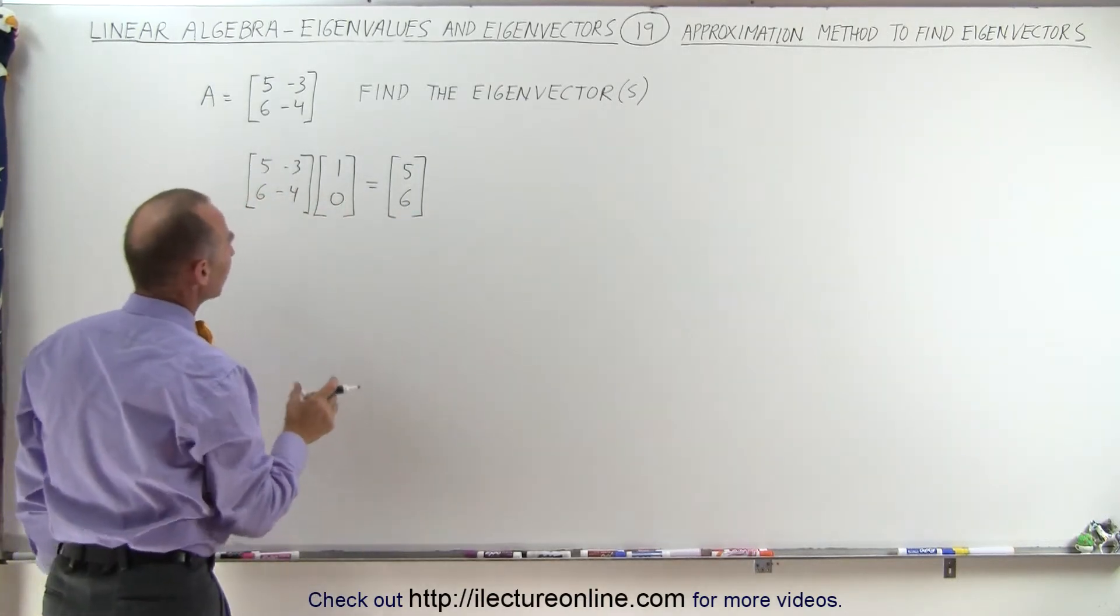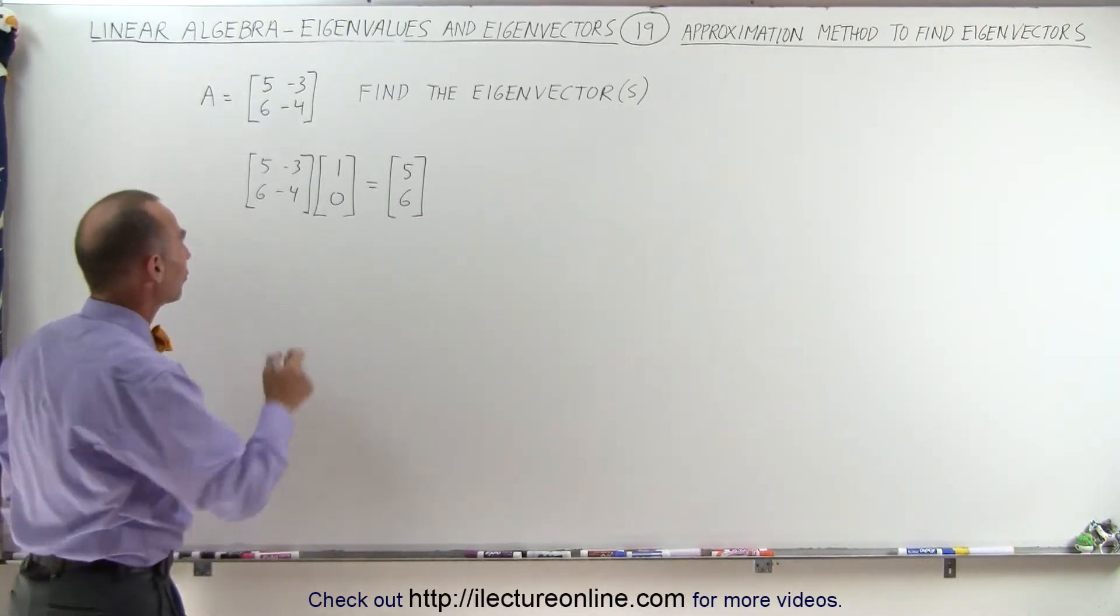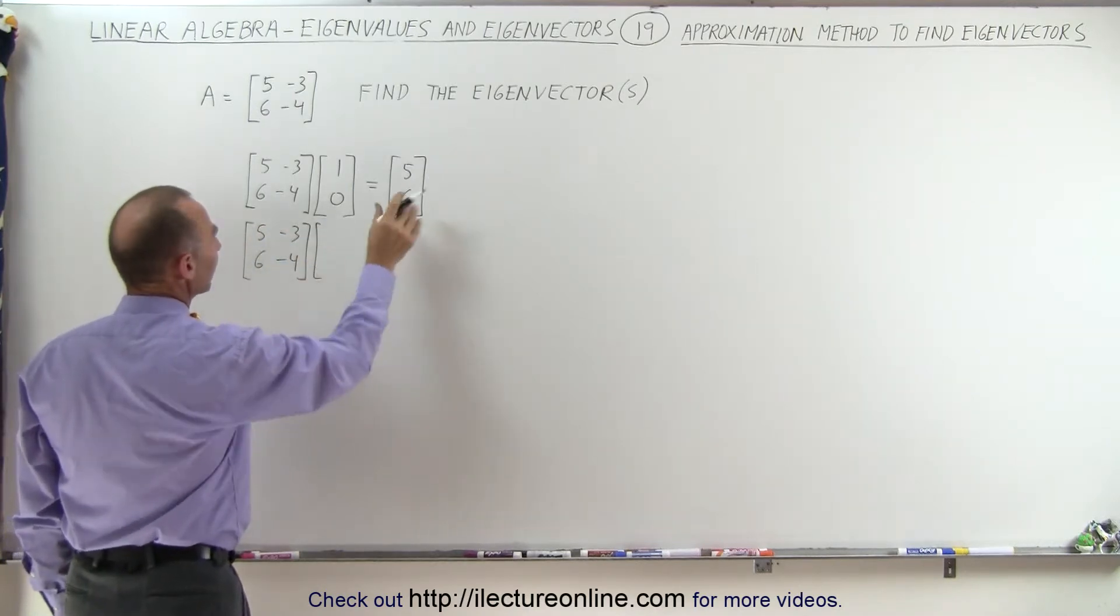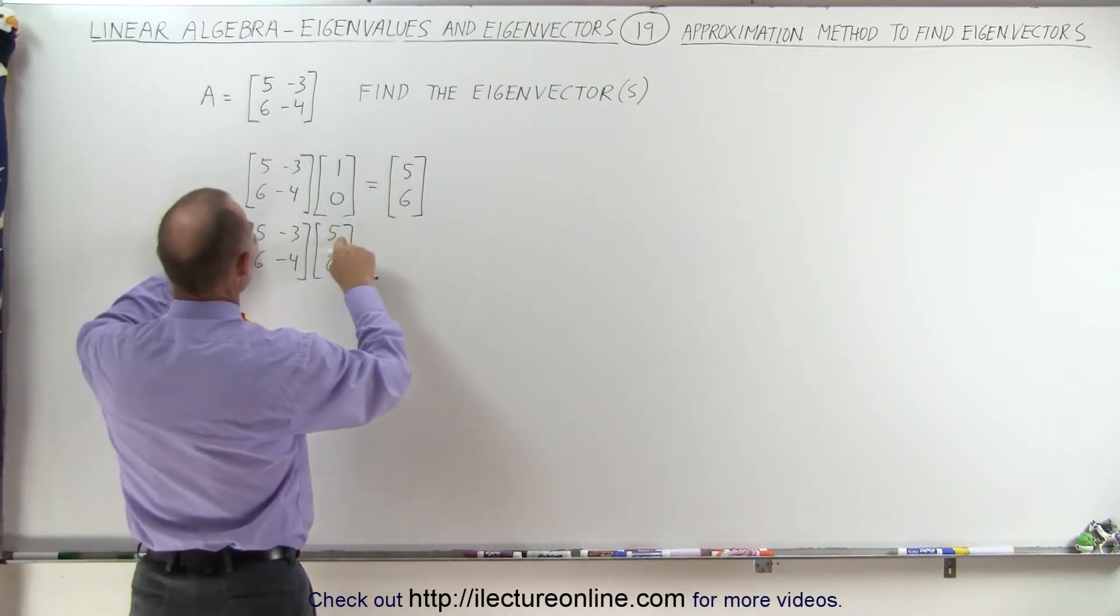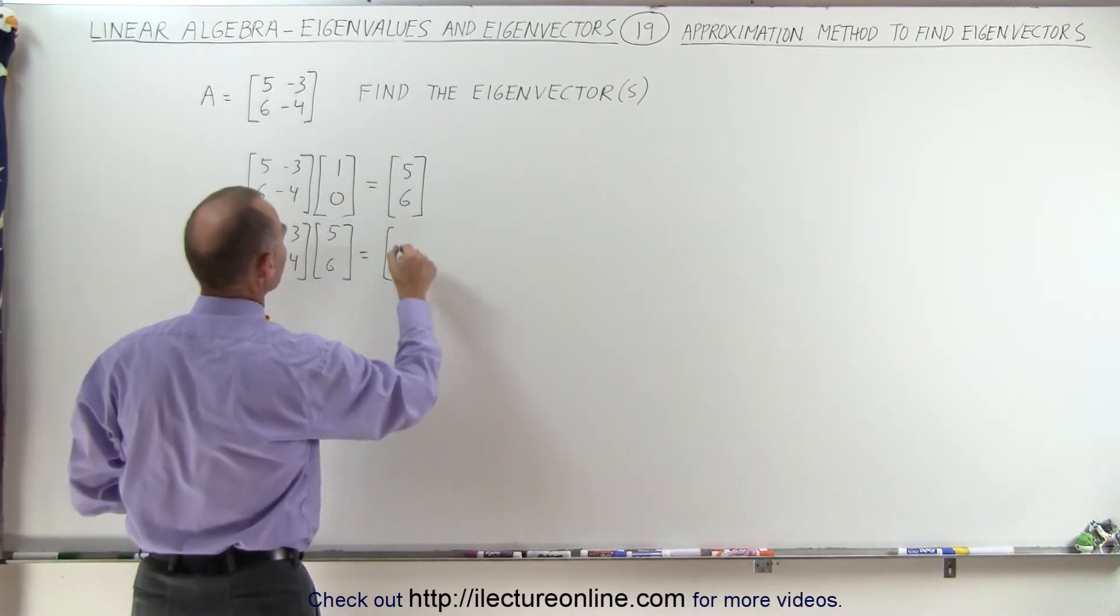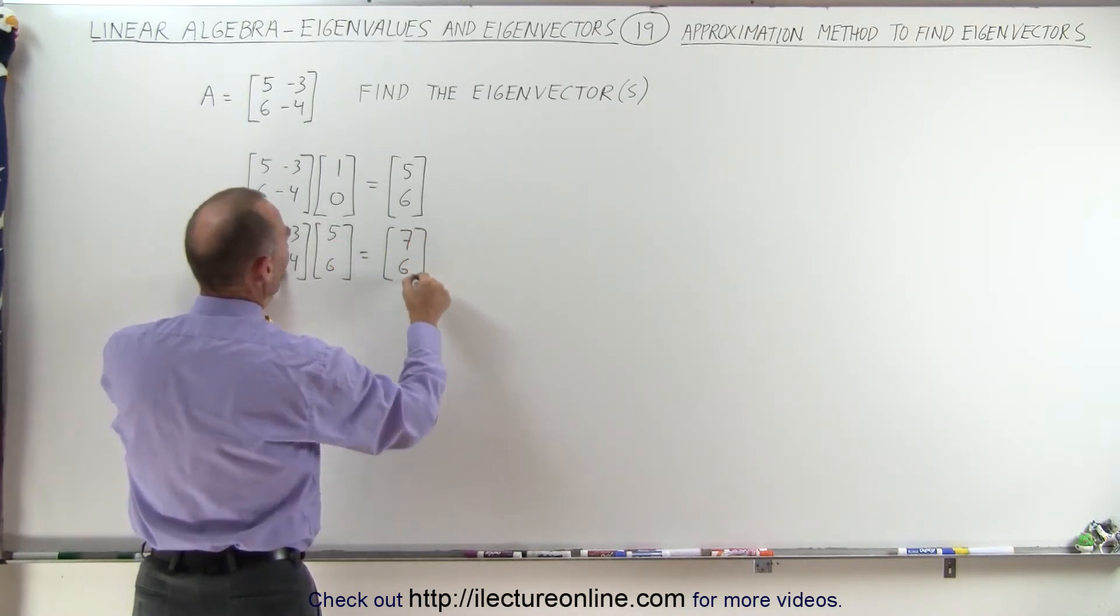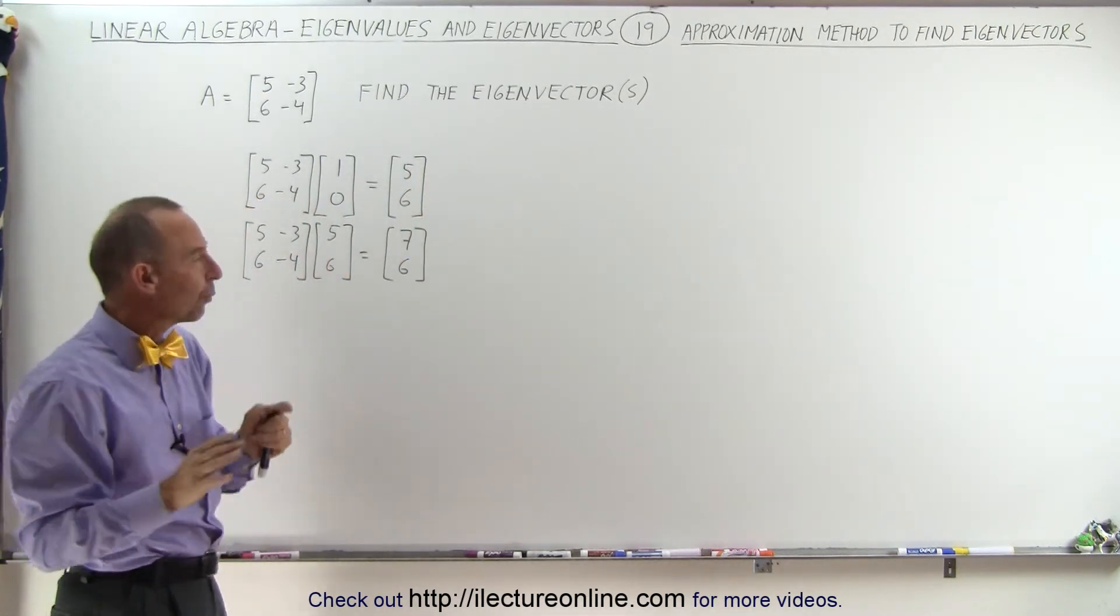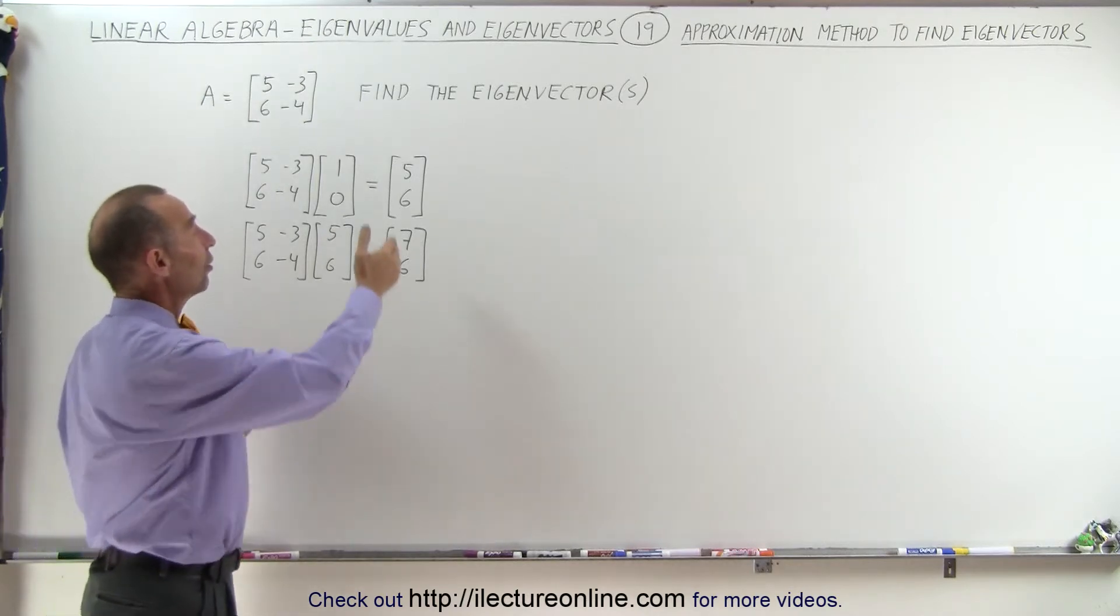Now the next thing we're going to do is we're going to multiply the matrix again, but now with the new resultant of the product of those two. So we'll take the original matrix -4 and I'll multiply it times this original result. So 5 and 6 and see what we end up with. So we have 25 minus 18. So 25 minus 18, that's 7. And here we get 30 minus 24, which is 6. Now notice here we had 5 sixths, here we get 7 sixths. Now both of those are relatively close to a one-to-one relationship. So the suspicion is that the eigenvector is 1 and 1.